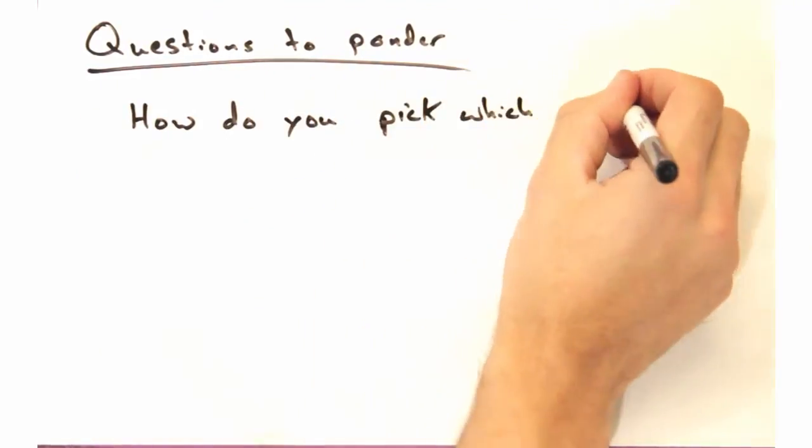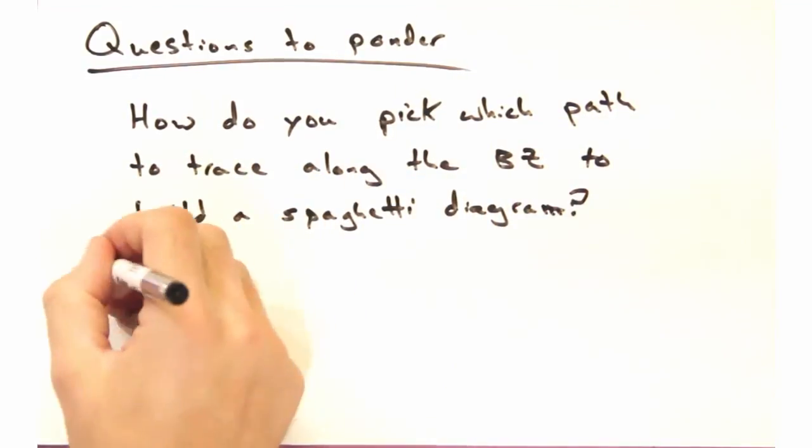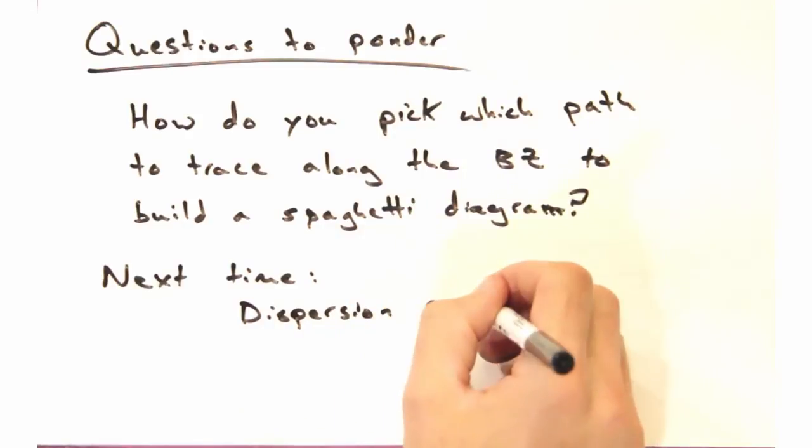And finally, how do you decide what path to trace along the Brillouin zone to build a spaghetti diagram? So thanks for watching today's solid state physics in a nutshell.